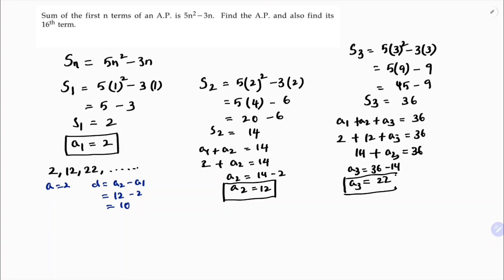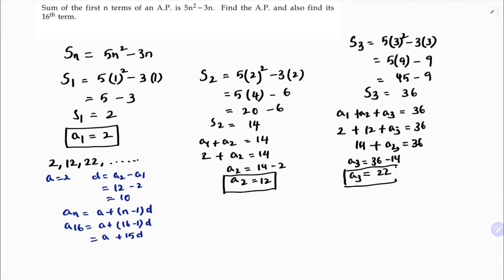To find the 16th term, the formula is an equals a plus (n minus 1) into d. So a16 equals a plus 15d, which is 2 plus 15 into 10, giving 2 plus 150, which is 152. So the 16th term is 152.